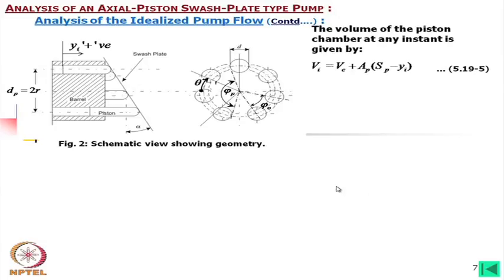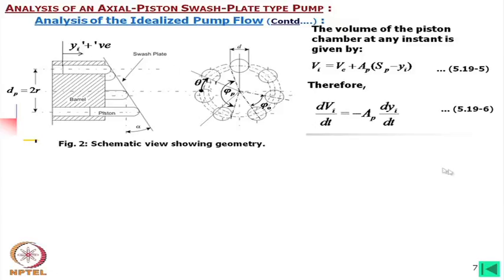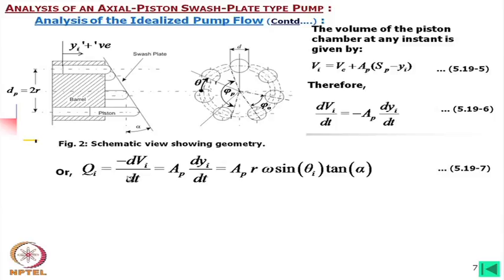The volume of the piston chamber at any instant is Vi = Vc + Ap·(Sp − yi). Therefore, dVi/dt = Ap·(dyi/dt). The negative sign appears in the derivation, which is why the negative sign was placed in the original flow equation, so that it ultimately becomes positive. Thus the flow qi for a particular piston can be defined accordingly.